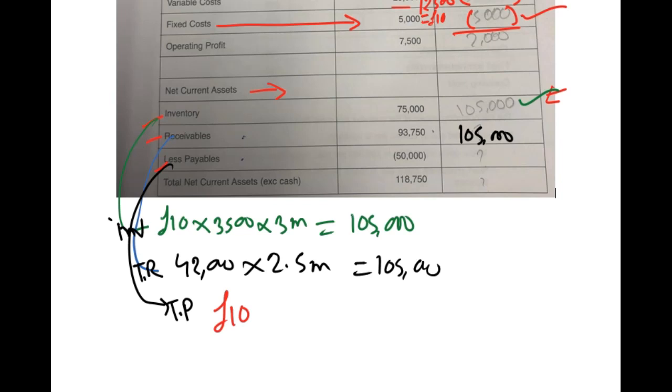Each month we're supposed to purchase and sell 3,500 times by two months. So £10 times 3,500 times two months - the answer is £70,000, your trade payables.